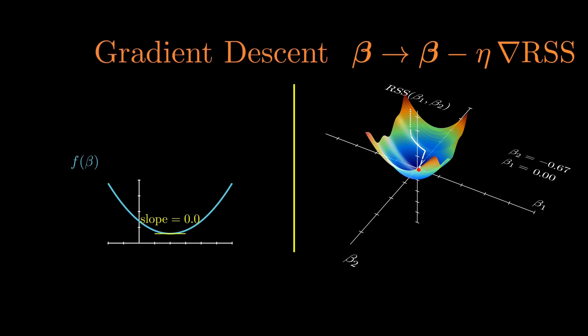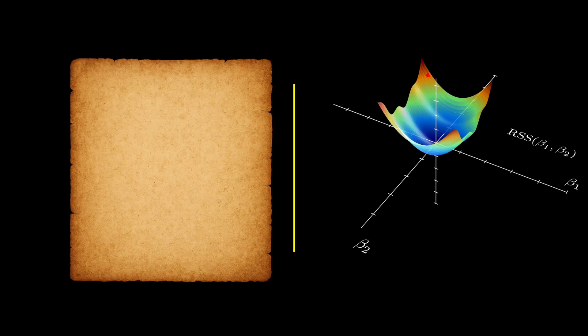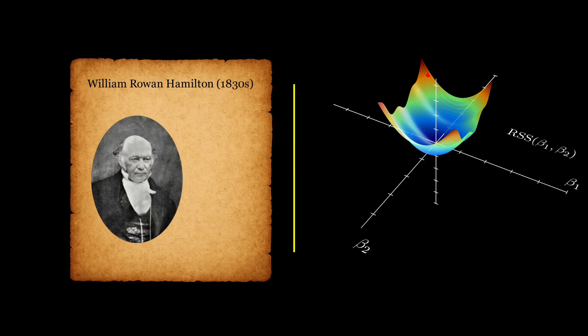But before we dive into that, let's talk about gradients. The concept of the gradient was formalized by another physicist and mathematician, William Rowan Hamilton, in the 1830s. He introduced the nabla operator, which became the foundation for vector calculus.